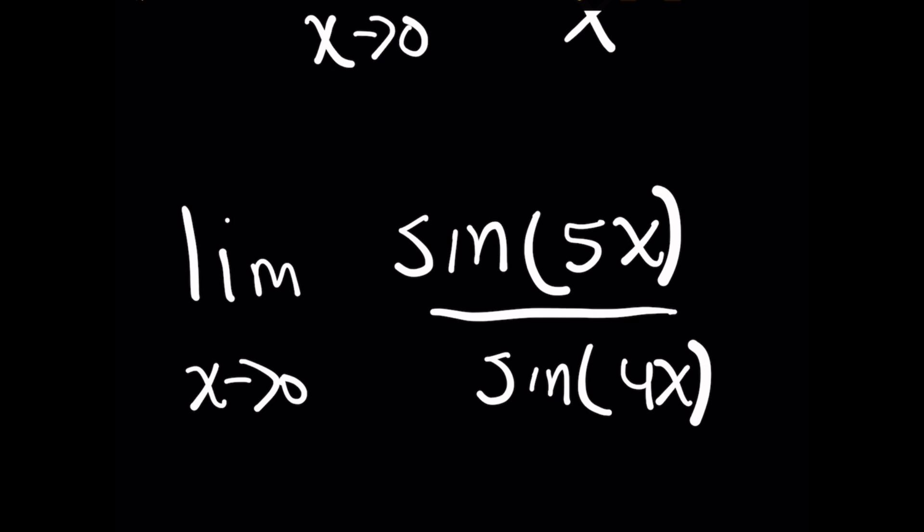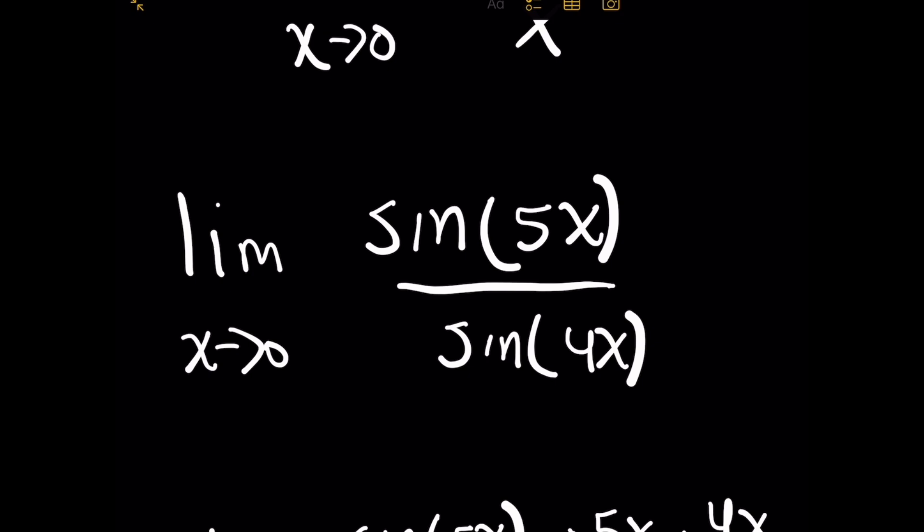So before actually plugging in the squeeze theorem to quickly solve these limits, we need to play a little bit of a manipulation game here to actually rewrite this limit in such a way where we get constants that look the same in front of x on both the numerator and denominator.